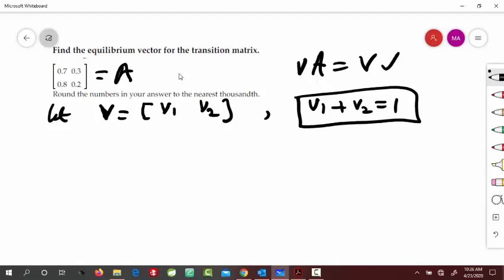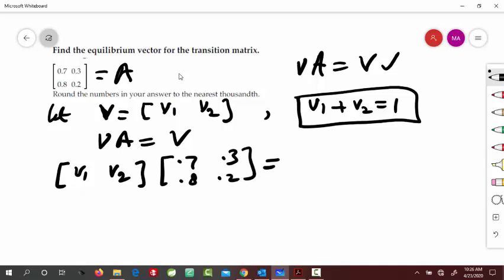And now, come to this equation, our equilibrium equation. So, vA is equal to v. So, our v is v1, v2. And our A is like, say, 0.7, 0.3, 0.8, 0.2. So, that should be equal to v. That is v1 and v2.